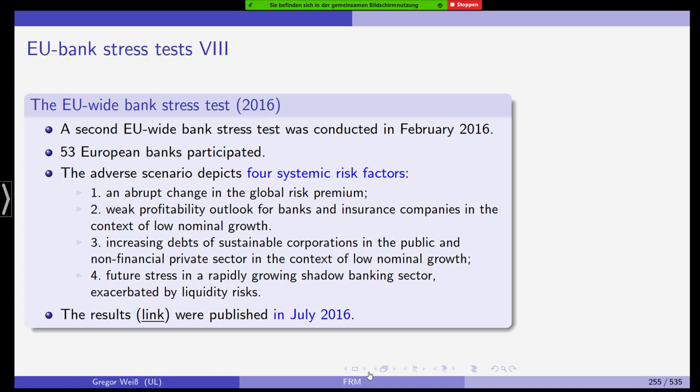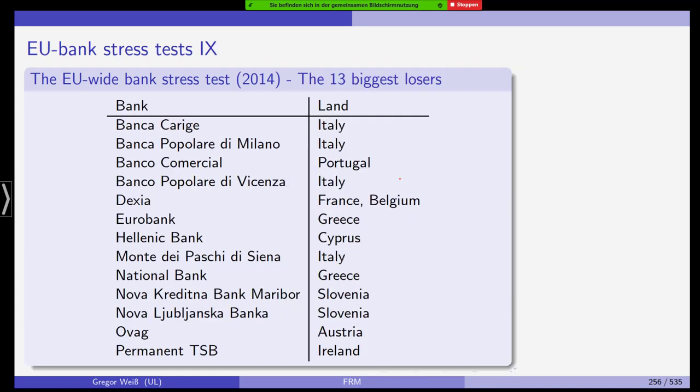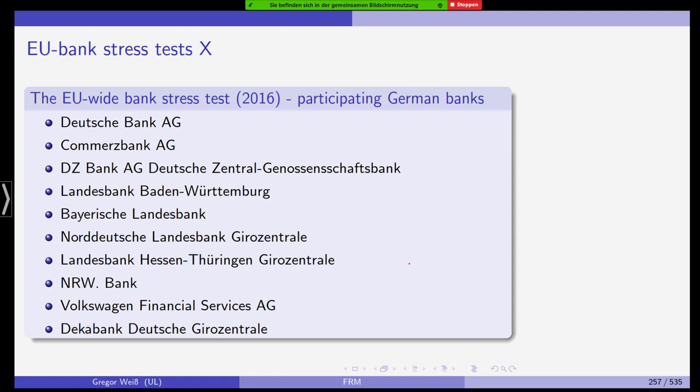In 2016, we had a different one. 53 European banks participated. You can check the results here, I've given you the link. They had different risk factors, systemic risk factors, different scenarios. But basically, the idea was the same. 13 biggest losers. Actually, not surprisingly, Monte dei Paschi di Siena, one of the most problematic bank in Italy for a number of years now, was one of the losers. They failed the stress test in 2014. The participating German banks: Deutsche Bank, Commerzbank, DZ, LBBW, Bayerische Landesbank, Neude Deutsche Landesbank, Landesbank Hessen-Thüringen, NRW Bank, Volksbank and DK Bank. These were the German banks that participated in the 2016 EU-wide bank stress test.